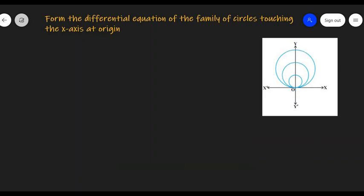We know that the equation of a circle with center at h, k is given by (x - h)² + (y - k)² = r², where r is the radius.